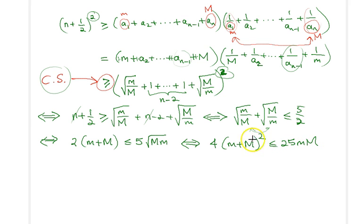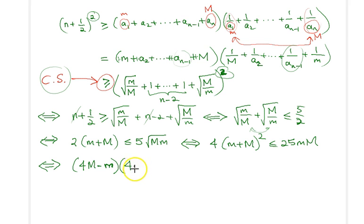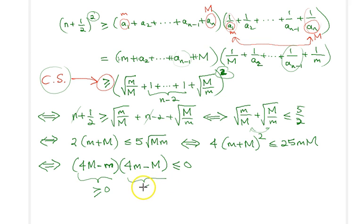Again factorizing, we get: (4·capital M − little m)(4·little m − capital M) ≤ 0. We know the first factor is always ≥ 0, so the second factor must be ≤ 0, which proves capital M ≤ 4·little m — the statement of our problem. That was a very nice way to apply the Cauchy-Schwarz inequality to a beautiful problem. Hope you enjoyed it, and see you in the next video.